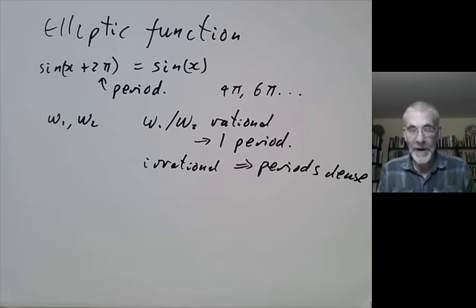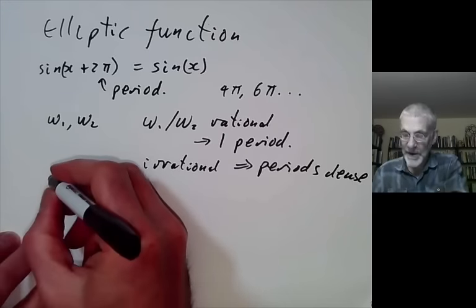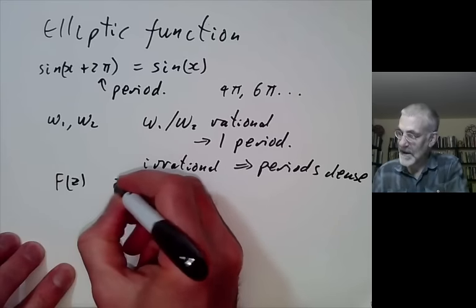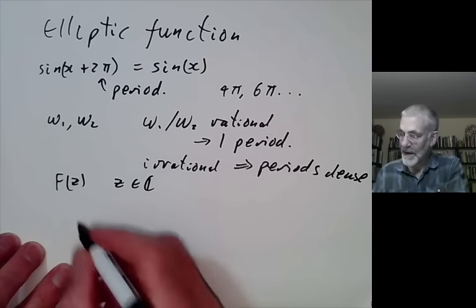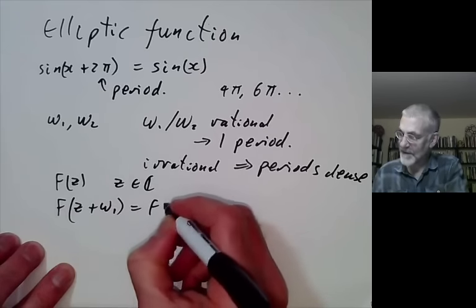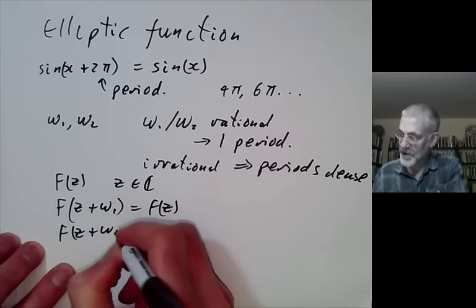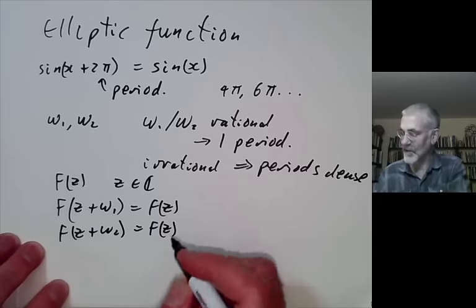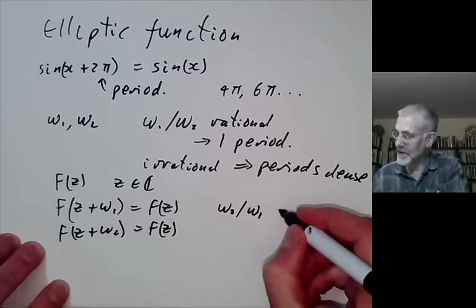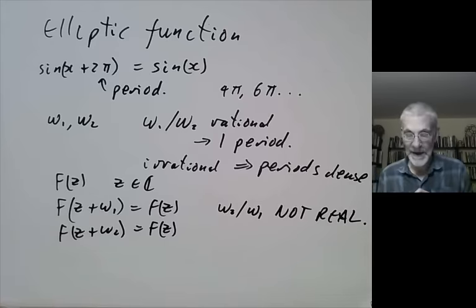So what we're going to do is talk about functions of a complex variable. We're going to look at elliptic functions f of z for z complex such that f(z + ω₁) = f(z) and f(z + ω₂) = f(z), where the ratio ω₂/ω₁ is not real, because if it is real, nothing very interesting happens.